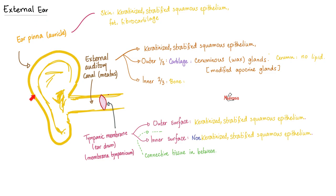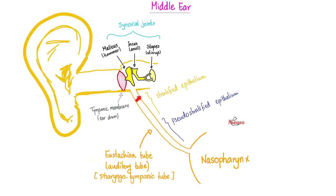Here's the external ear. We have the auricle, or the ear pinna, the external auditory meatus or canal, and then the tympanic membrane — the eardrum, or membrana tympanica. As for the middle ear, it has the famous three bony ossicles, with synovial joints between them.